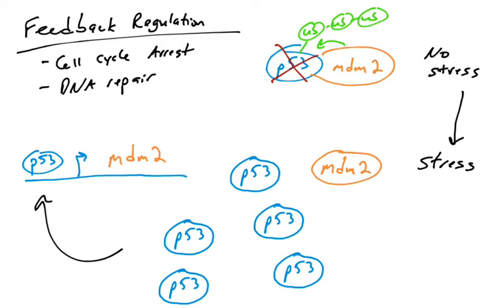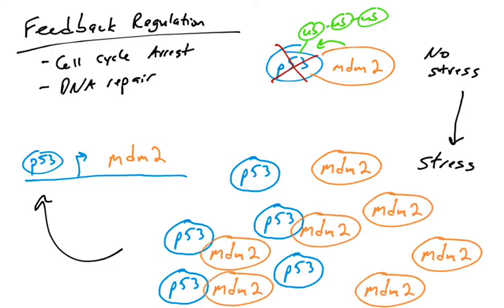Well remember, P53 is regulated by MDM2, so P53 will actually turn on the MDM2 gene. So this is actually really weird to think about. P53 can actually turn on the gene that makes its own destroyer. MDM2 is this ubiquitin ligase that will destroy P53.